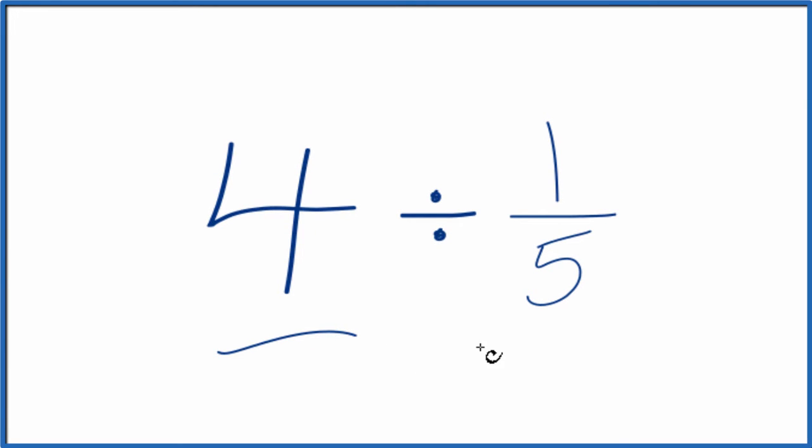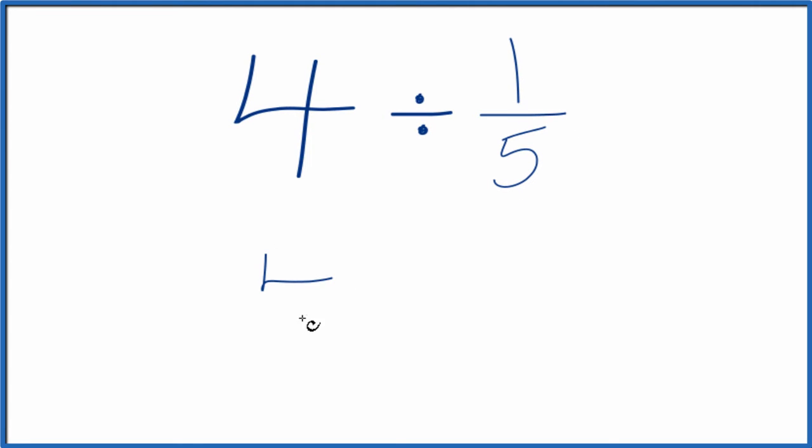Let's divide 4 by 1 fifth. Here's how we'll do that. Let's call this 4 over 1. It's still 4. We're dividing just by 1. But now we have a fraction, and that'll make this easier.